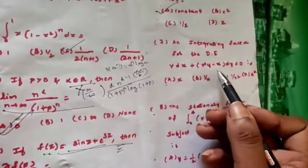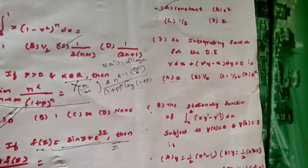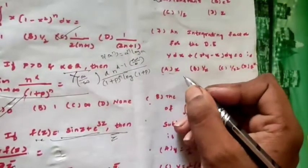The next question: find the integrating factor for the differential equation y dx + (x²y - x) dy = 0. Four options are given: x, 1/x, 1/x², e^x. Rather than using the integrating factor concept directly, I will use a trick — eliminate options. We know the exact differential equation concept: if given M dx + N dy = 0 is exact, then M_y = N_x.